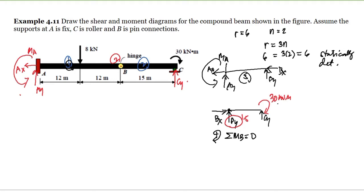For the moment, taking summation of moments at B equal to zero, we have 30 kilonewton clockwise minus CY times 15 equals zero. So CY is equal to 2 kilonewton upward.